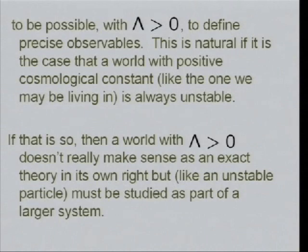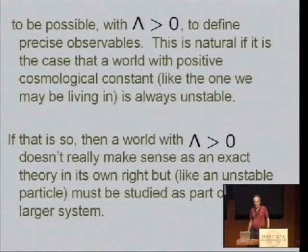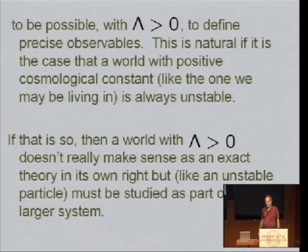There aren't local operators in quantum gravity in general because the fluctuations in space-time mean that the x that would appear as the argument of the local operator is gauge dependent. So observables in quantum gravity always have to do with some consideration of the asymptotic behavior. And with positive cosmological constant, there's nothing really nice.